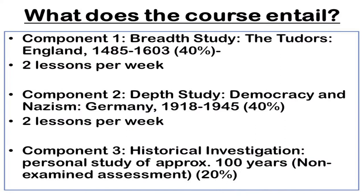Component one is the breadth study, which is the Tudors — looking at England between 1485 and 1603. Component two is the depth study: democracy and Nazism in Germany between 1918 and 1945. Component three is the historical investigation, a personal study of approximately 100 years. The PowerPoint shows the breakdown of how much each component is worth. You get four lessons a week in total.